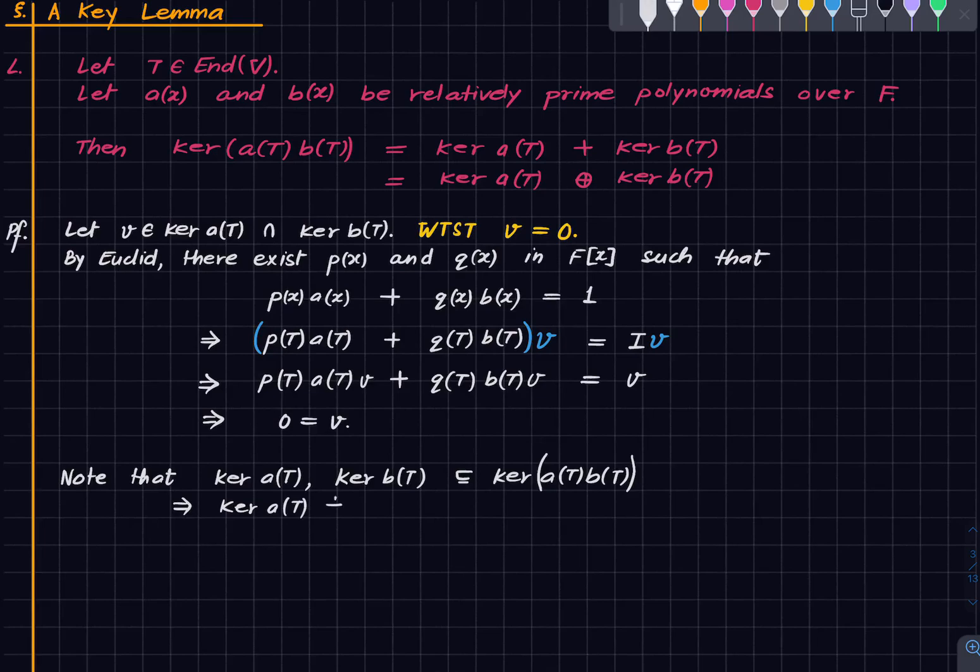Therefore we have this. Kernel a(T) and kernel b(T) are both contained here, and hence their sum is also contained here. So if we take dimensions on both sides we get this.